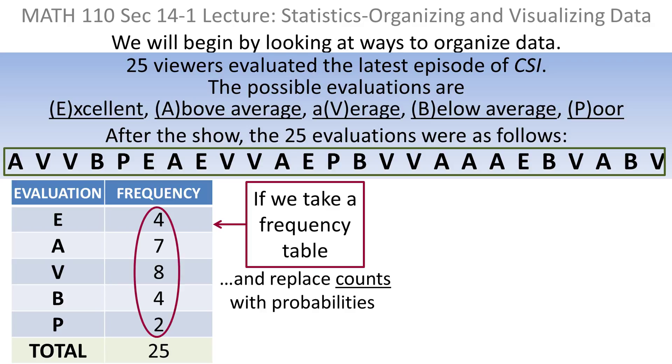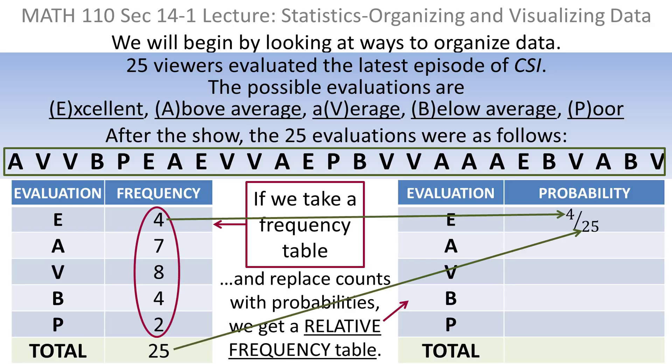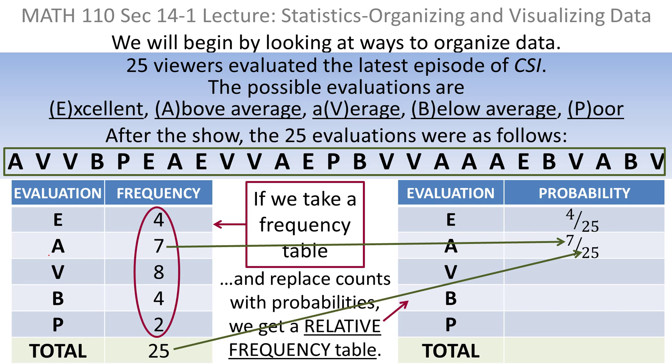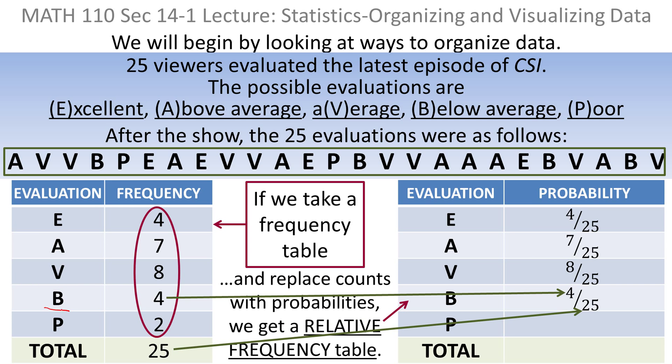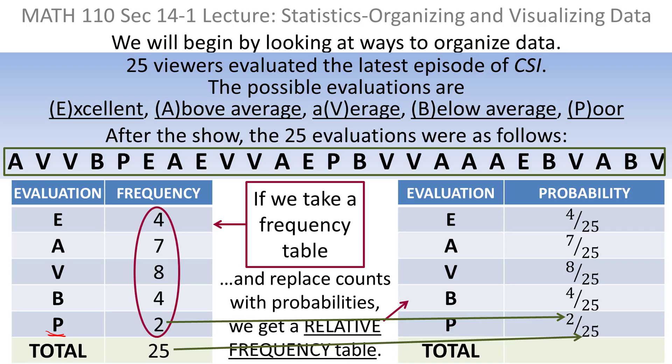Now what if we take this frequency table and replace the counts with probabilities? Since there are 25 evaluations, the probability of a random evaluation being an E is simply four out of 25. The probability of an A is seven out of 25, V is eight out of 25, B is four out of 25, and P is two out of 25. If you add those numbers up, you get 25 out of 25, which is one. The sum of those probabilities will always be one.